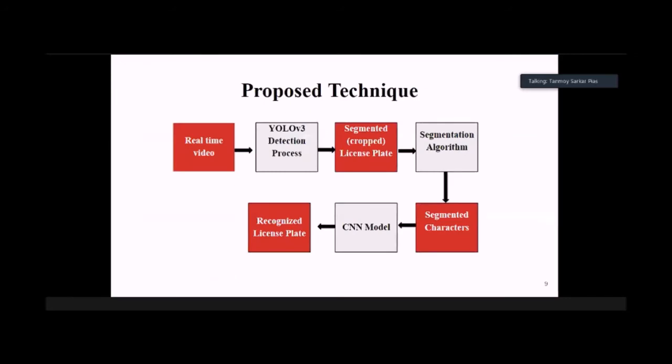This is our proposed technique. We feed real-time video and use YOLO detection process to detect the license plate. It segments the license plate from the video and gives it to the next stage. In the next stage, we use the segmentation algorithm that my colleague already discussed. After segmenting the characters, we pass it to the CNN model for recognition. Then we get a recognized license plate.